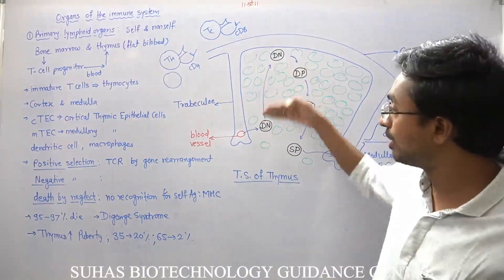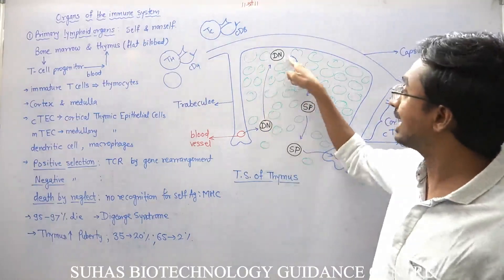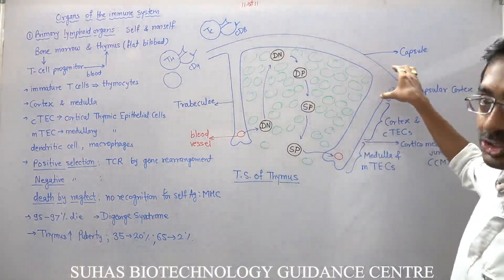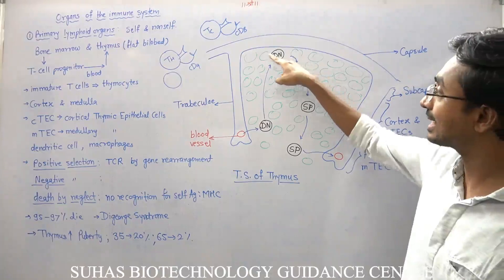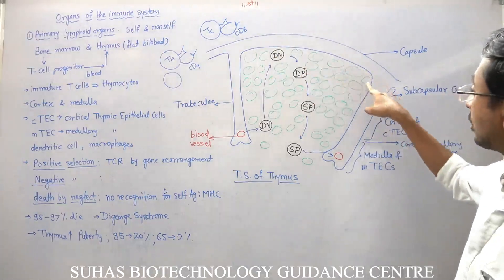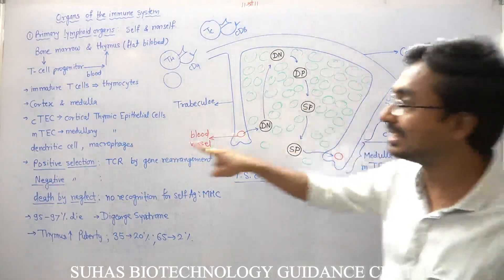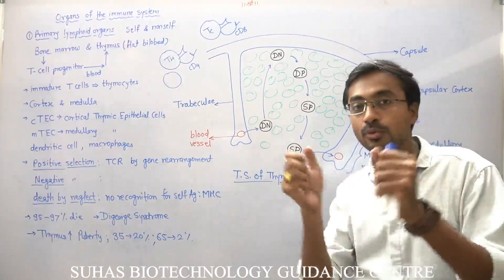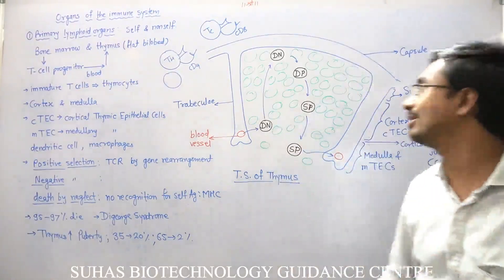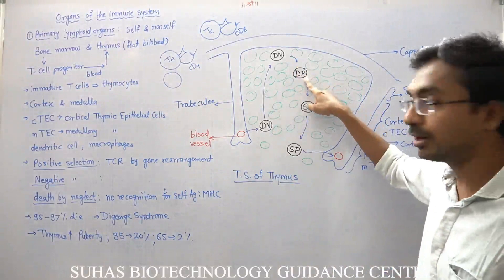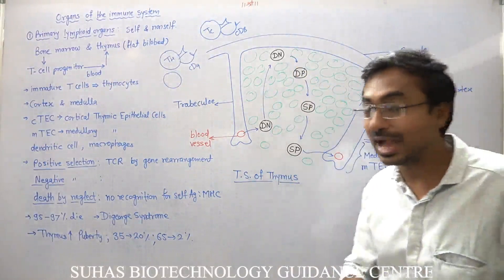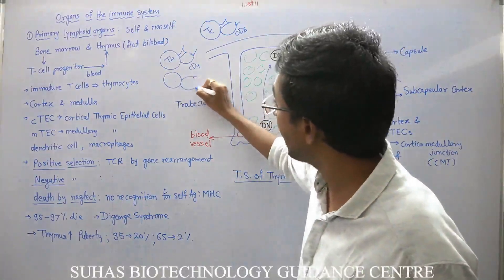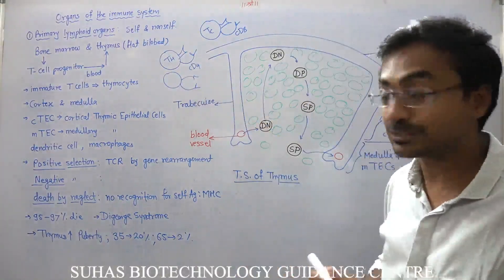Here, as it is exposed to the cortical thymic epithelial cells — cTEC cells — these cells will interact with it, give proper education to it, and because of that maturation it will become double positive. This double negative cell will now develop both CD4 and CD8, and that's why it is called double positive.